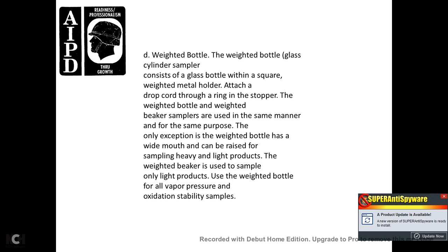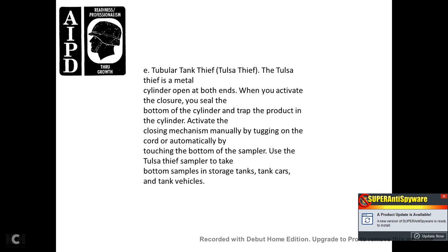Bacon bomb thief (tanker car thief): a nickel-plated brass cylinder tapered at the bottom, fitted with an internal plug vent and plunger valve. The valve opens automatically when the sampler strikes the bottom of the container, and closes automatically when you lift the sample. A trip cord makes it possible to open the cylinder at any level. Use the bacon bomb thief to take bottom samples and samples in storage tanks, tanker cars, and tank vehicles. Tubular tank thief (Tulsa thief): a metal cylinder that opens with a bolt engine; when you activate the closure, you seal the bottom of the cylinder and trap the product. The closing mechanism is activated mainly by tugging the cord or automatically by touching the bottom. Use the Tulsa thief to take bottom samples in storage tanks, tank cars, and tank vehicles.